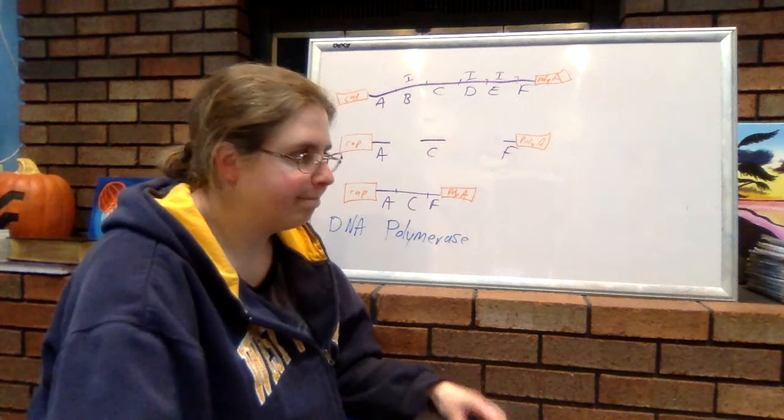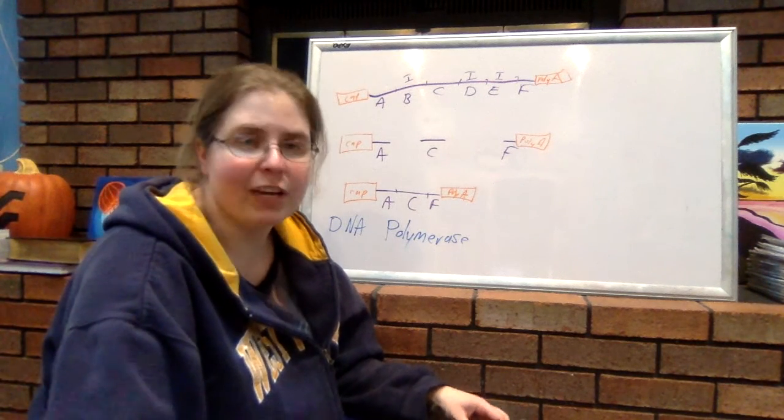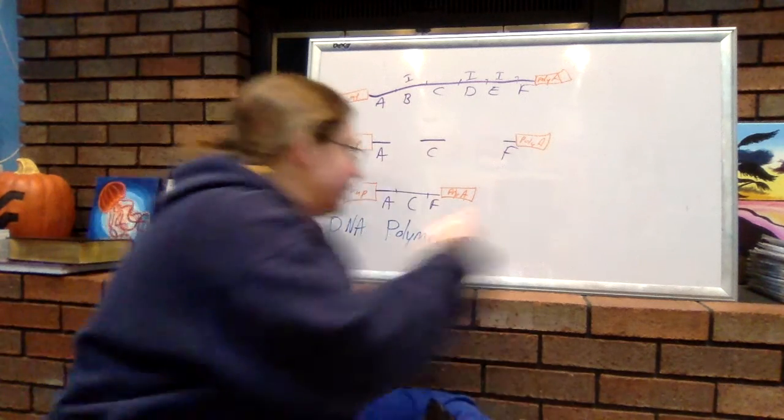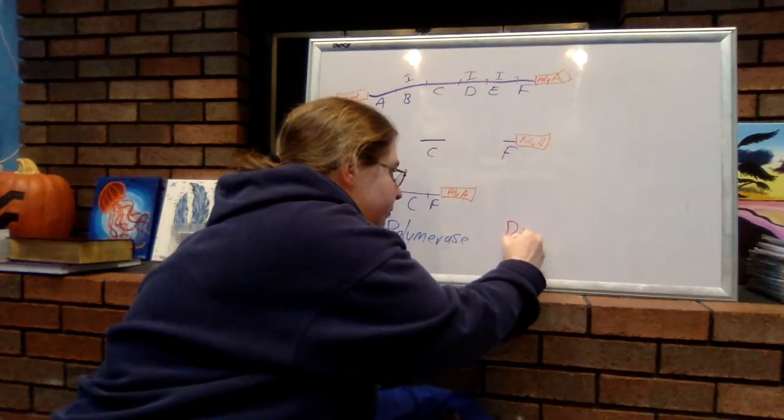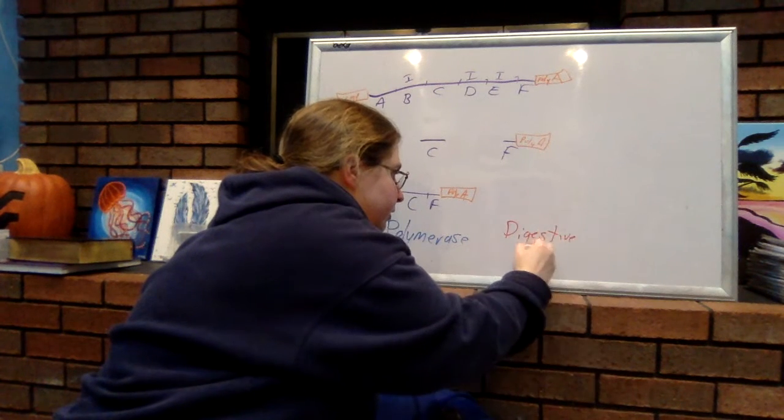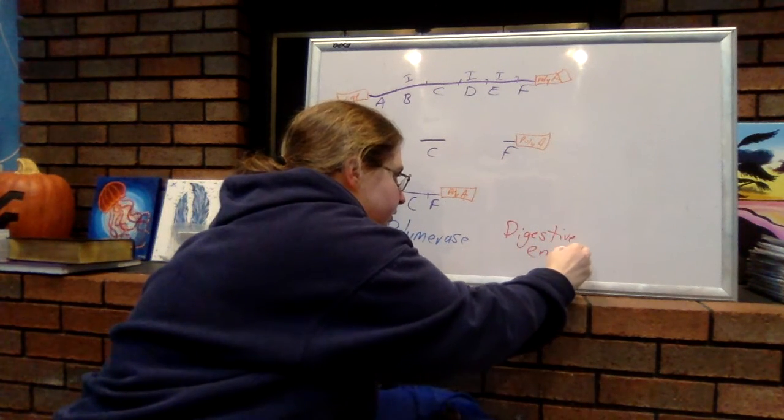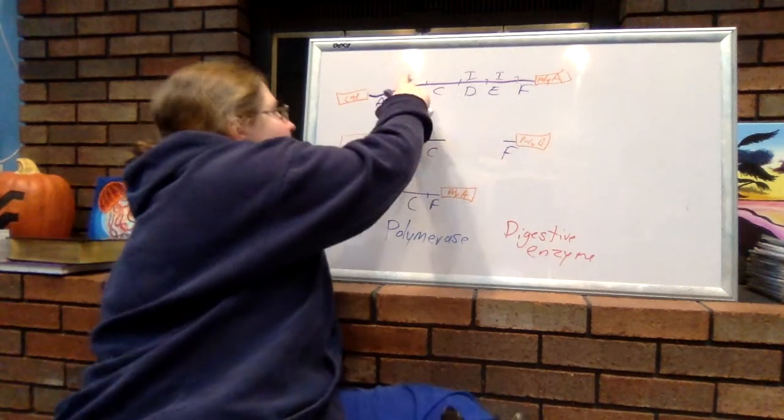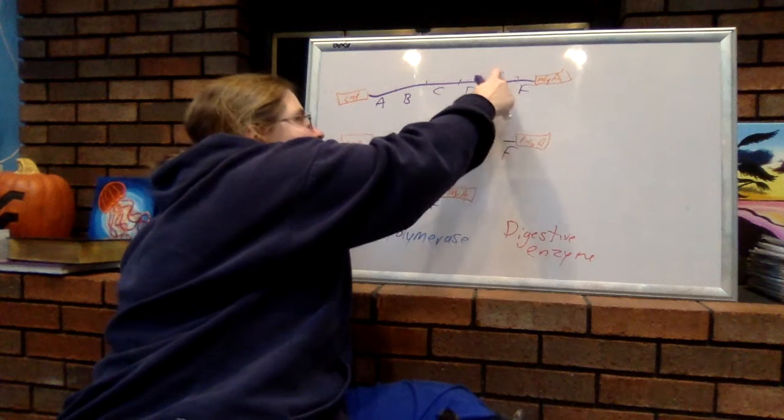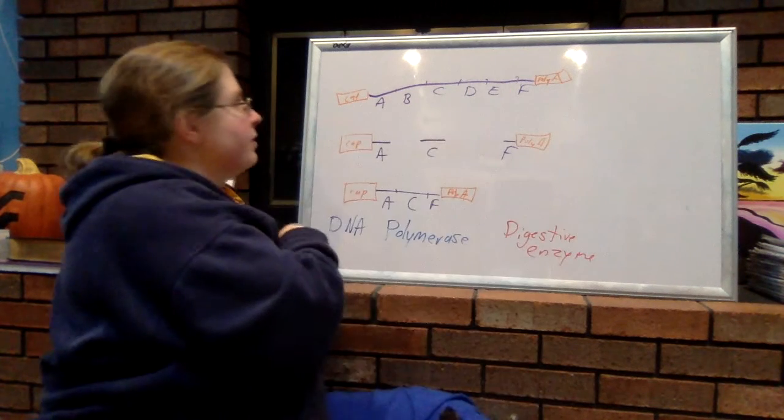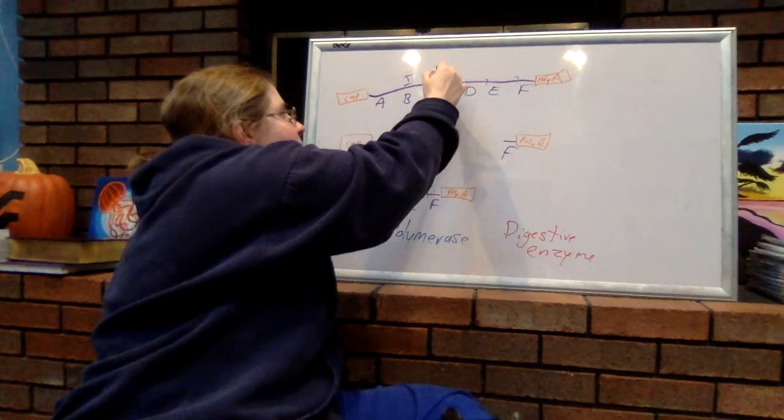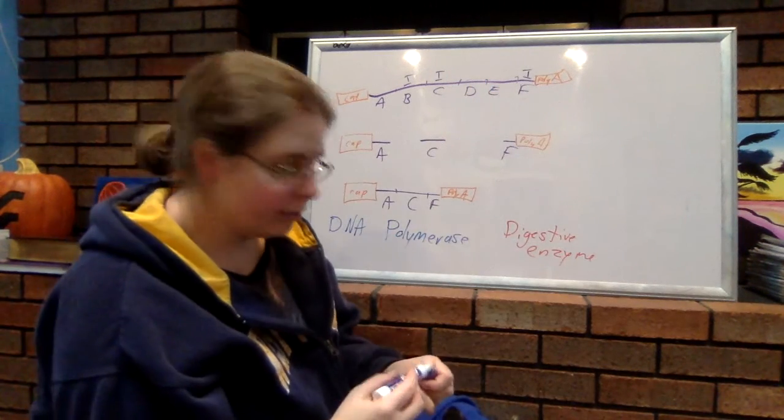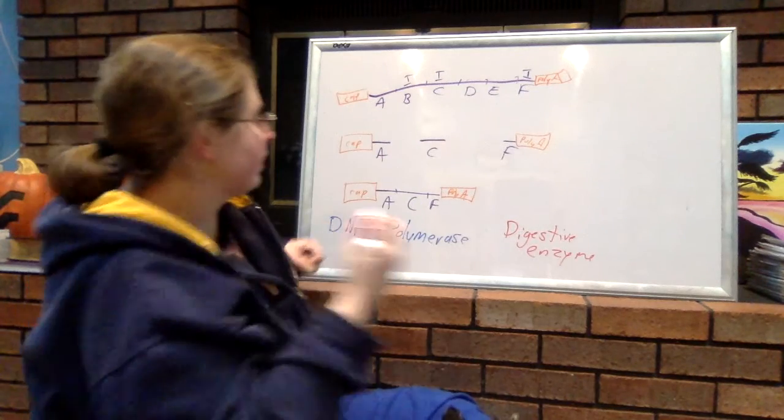So, when we want to make a digestive enzyme. So, let's see. Maybe I want to make a digestive enzyme for the stomach. I'm going to start off with the same sequence. But, instead of considering B, D, and E the introns, maybe B, C, and F are considered introns. Which means, those are the three that will get cut out.